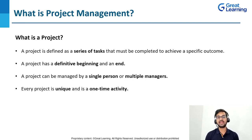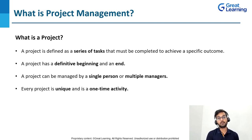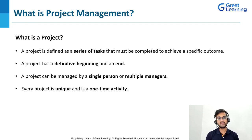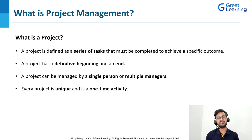A project has a definitive beginning and an end — it's not like an ongoing process. Every project is unique; we know where to initiate and where to end. A project can be managed by a single person or multiple managers, depending on the scope. Since there is a definitive beginning and a definitive end, it's a one-time activity. Once we reach the end goal, the project is done.